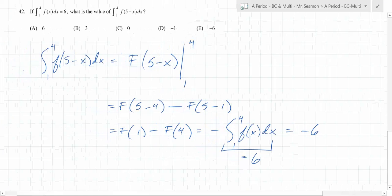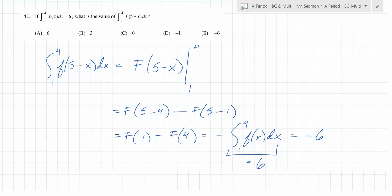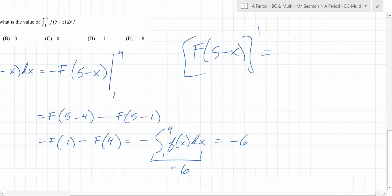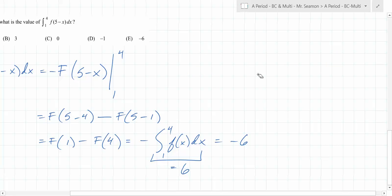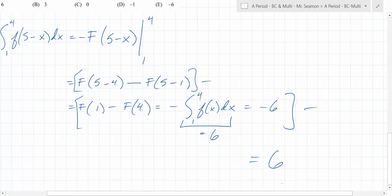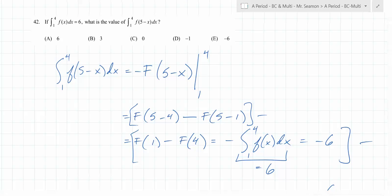So we know the integral from 1 to 4 of f(x) dx equals 6. That means F(1) − F(4) = −6. But wait — when you integrate f(5−x), there's a chain rule factor. Differentiating F(5−x) gives f(5−x) times −1, so integrating f(5−x) brings out a negative. That means the whole expression needs a negative sign on the outside, making the answer 6. Don't forget the chain rule.